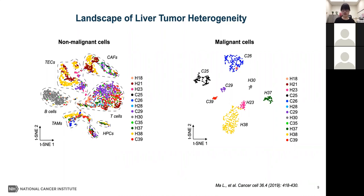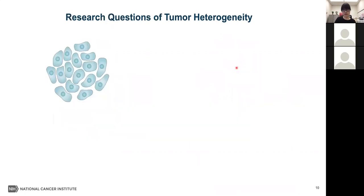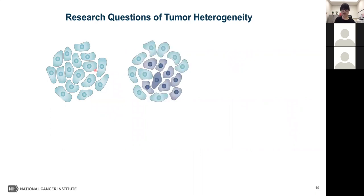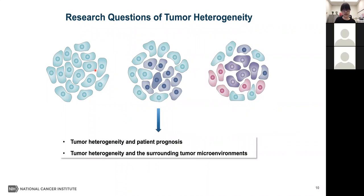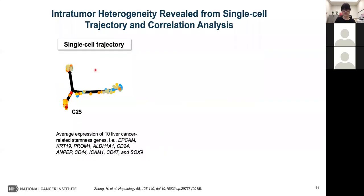The question is: how are tumor cells different from one another within a single tumor? Is it a situation of very low degree of heterogeneity with one or two clones, or high degree of heterogeneity with a highly mixed heterogeneous tumor cell population? Is the degree of heterogeneity associated with patient prognosis? I first studied intra-tumor heterogeneity by constructing single-cell trajectories of each tumor, with cells colored by the average expression of 10 liver cancer-related stemness genes. The single-cell trajectory between stem-like cells and well-differentiated cells was revealed.